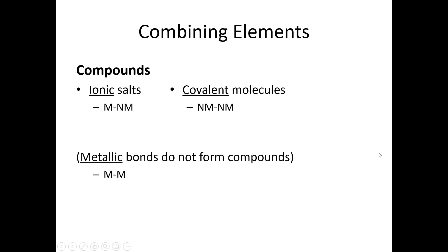Whenever a compound forms, there are two different types of bonds that can be created: ionic bonds and covalent bonds. When an ionic bond is formed, we are combining a metal with a non-metal. When a metal and a non-metal combine to form a compound, we call that a salt. So ionic bonds create salts.